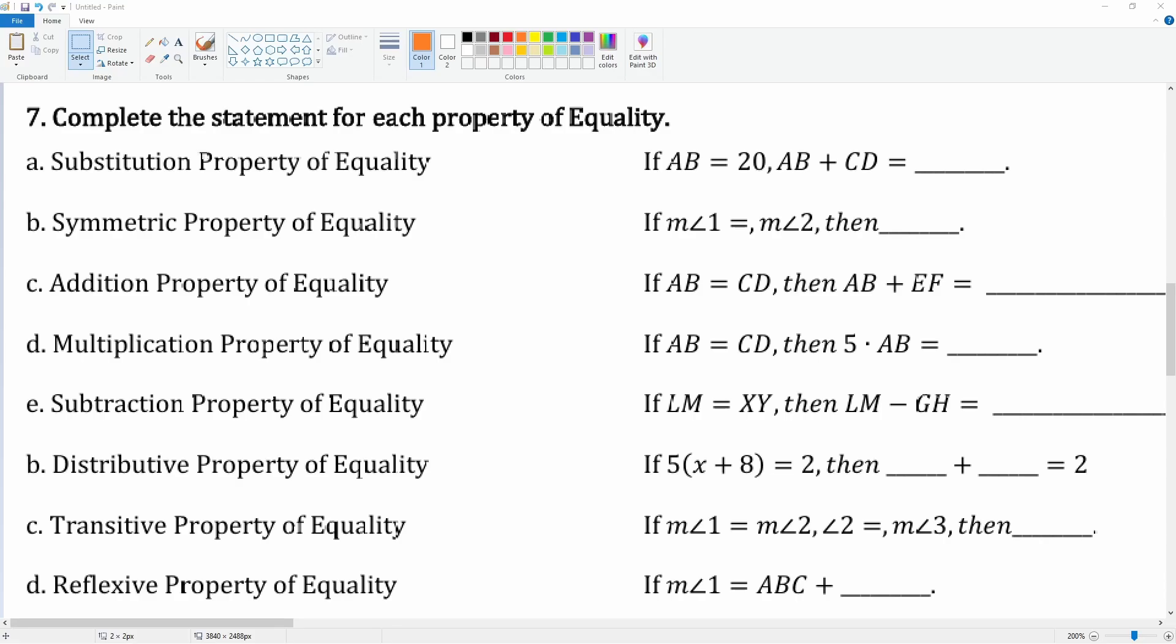So here we're looking to just complete the statement based on the property of equality. For the substitution property, if AB equals 20 and AB plus CD, this means the 20 is replaced with AB, so this becomes 20, then we just add the CD like normal.